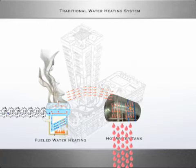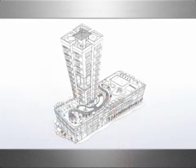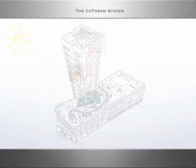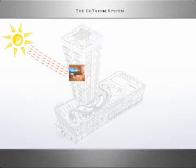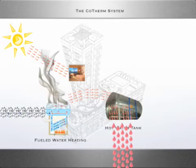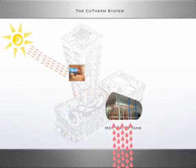Now let's use Cotherm to combine these two systems. Looking at the air conditioning system first, the sun's energy is absorbed into the hotel guest room and the heat is then transferred to the air conditioning system. But let's not throw out that heat. Now let's take a look at the hot water system where operators pay to generate heat — but let's remove that expense by eliminating the use of fuel.